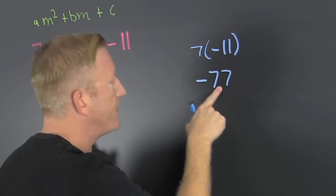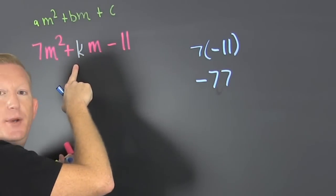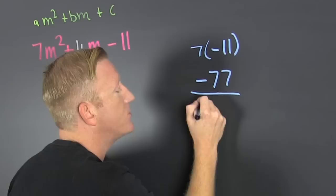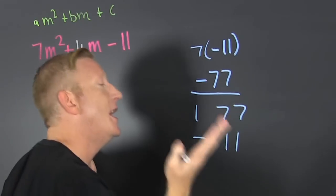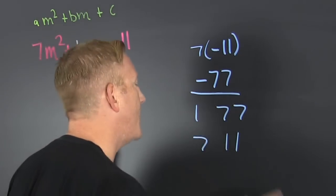Then I take that product and I get a minus 77. So we're looking for the factors of 77 that are going to subtract to be k. Break it down. That's 1 and 77, that's 7 and 11.